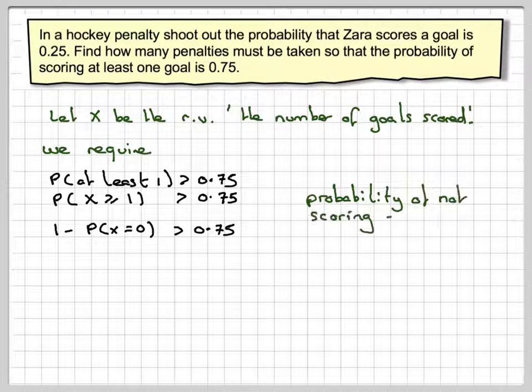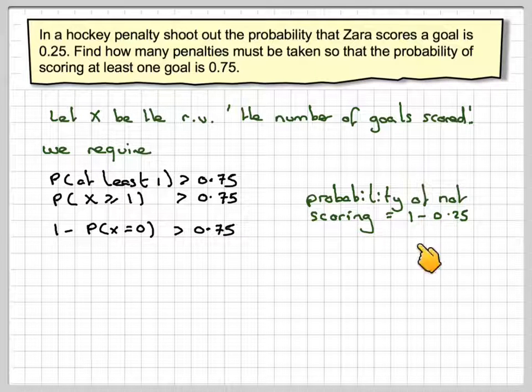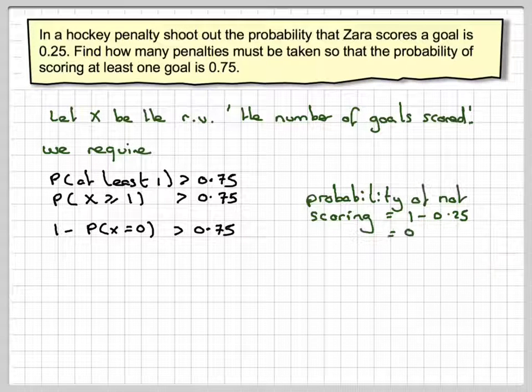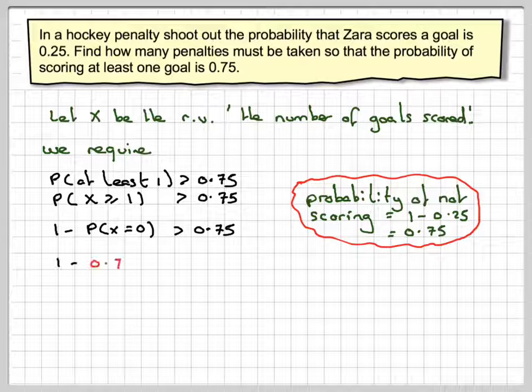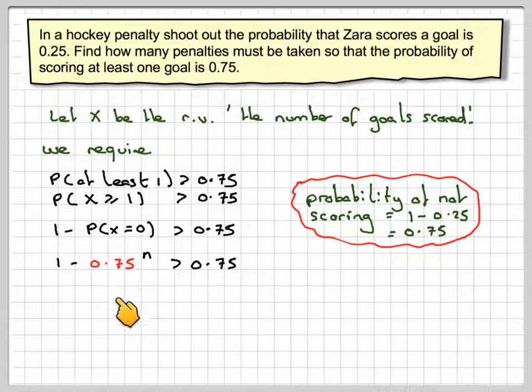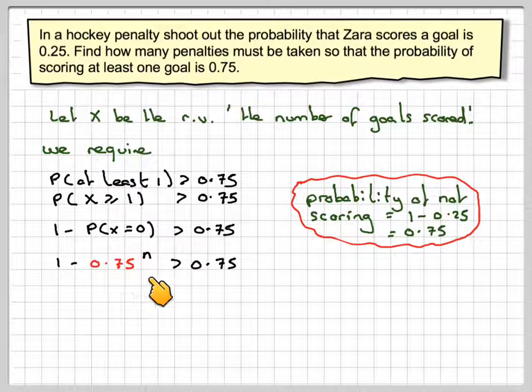So the probability of not scoring will be 1 minus 0.25, which is 0.75. Therefore, the probability of X is equal to zero is 0.75 to the power of n.